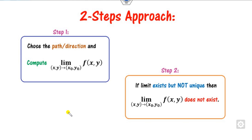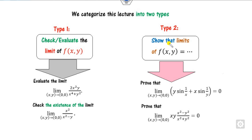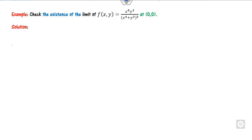As discussed, we will cover a two-step tool explained through 12 numerical examples. There are two categories. The first is where you check whether the limit exists, or evaluate the limit. The second is where you have to show a proof that the limit equals a specific value — for example, prove that the limit is zero. So there are two categories: evaluating or checking existence, and formally proving the limit.